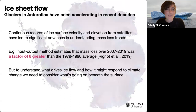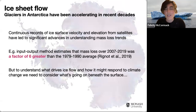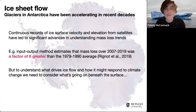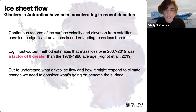We know from satellite records that glaciers in Antarctica have been accelerating in recent decades, and having continuous records of ice surface velocity have been a real game changer in our ability to understand mass balance from Antarctica and Greenland. We've seen that mass loss has been increasing, so using the input-output method, mass loss averaged over the period 2007 to 2019 was a factor of six greater than the 1979 to 1990 average, especially in Antarctica, where mass loss isn't driven by changes in the surface mass balance like it is in Greenland. These data also really help us estimate not just mass loss as a result of discharge at the grounding line, but also to investigate some of the dynamic processes driving that mass loss.